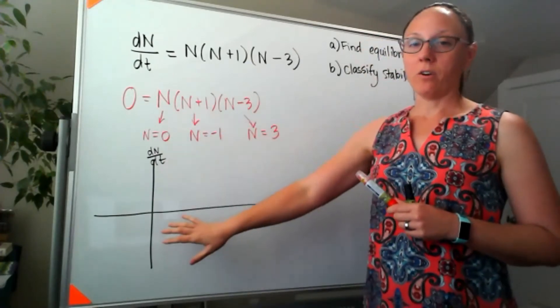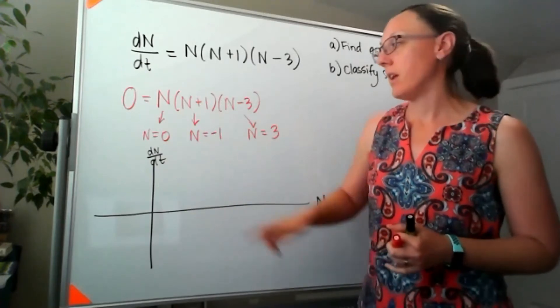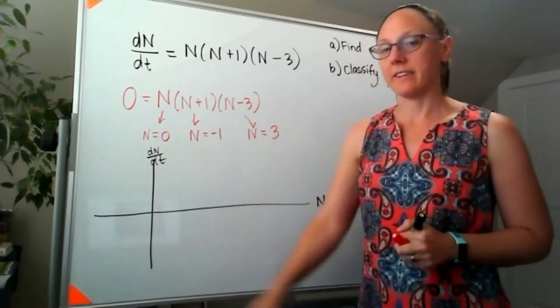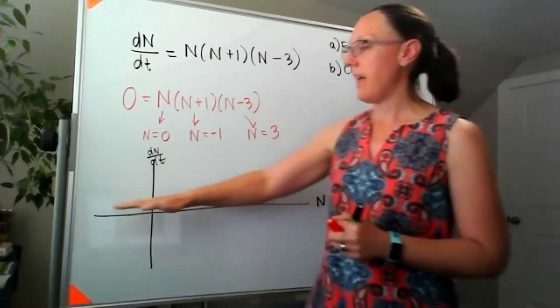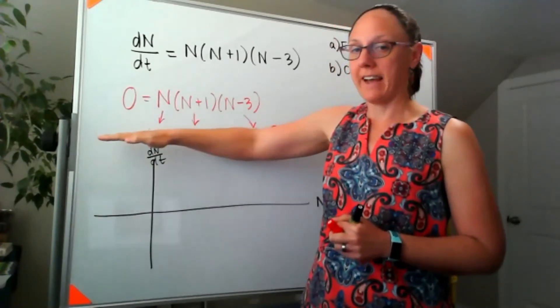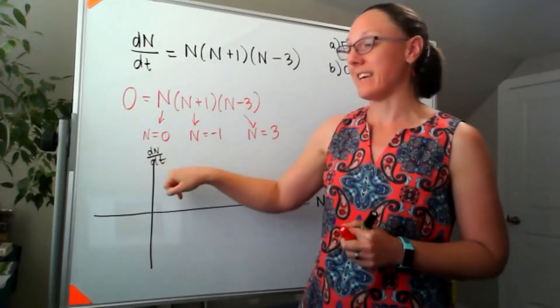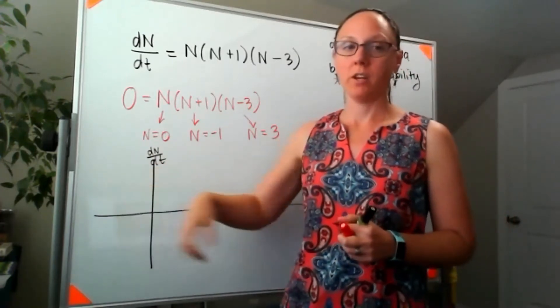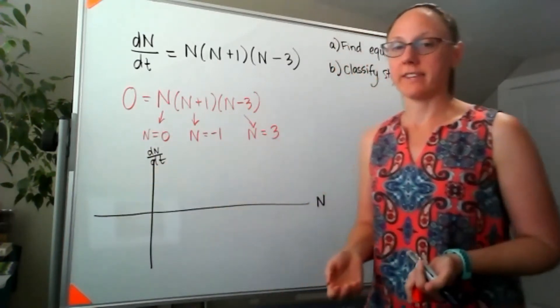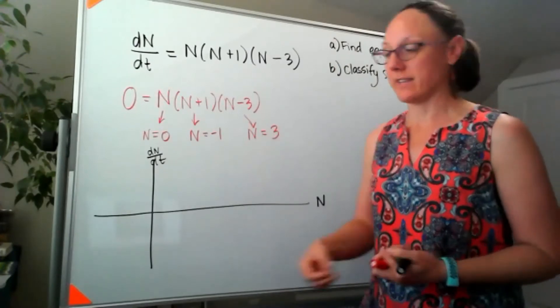Thinking about, before I even put a graph on here, since this is my dN/dt axis, everything that's above this axis represents where my dN/dt is greater than zero. Well, if my derivative is greater than zero, that means my function is increasing.